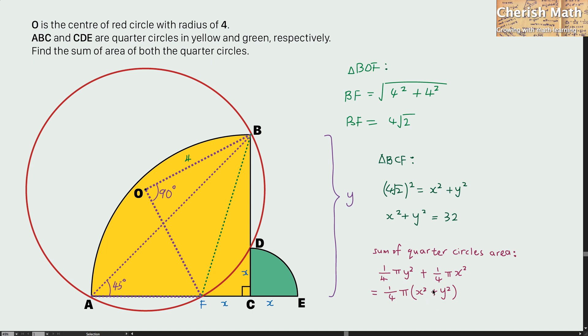And next, I'm going to substitute the value of x square plus y square as 32 into the equation and the value that I'm getting for the sum of area is 8 pi. And I solved the puzzle.